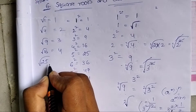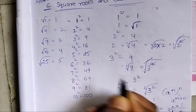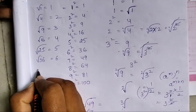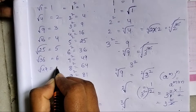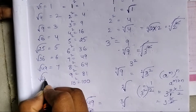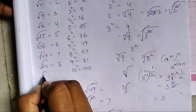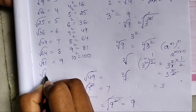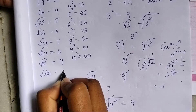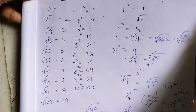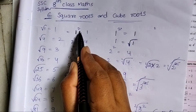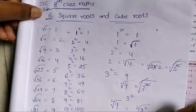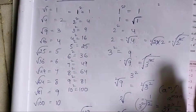Square root of 25 is equal to 5. Square root of 36 is equal to 6. Square root of 49 is equal to 7. Square root of 64 is equal to 8. Square root of 81 is equal to 9. Square root of 100 is equal to 10. Here is the first square and here is the first root — you can see the difference between square and square root.